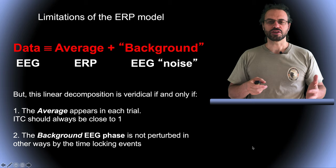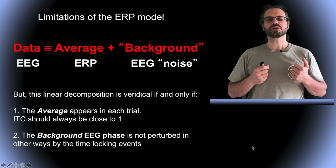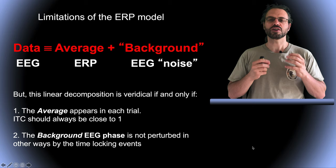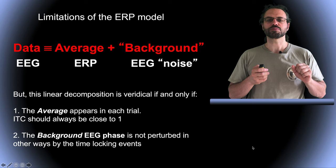I am going to provide an example here. This is the standard event related potential or ERP model. In this model the EEG single trial is equal to the average plus some background noise. This means that the ITC should always be close to 1 with perfect synchronization of the phase in single trials. It also means that the background EEG noise is not affected by the presentation of the stimulus.